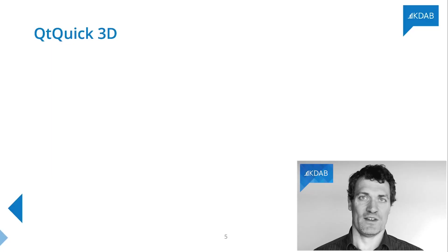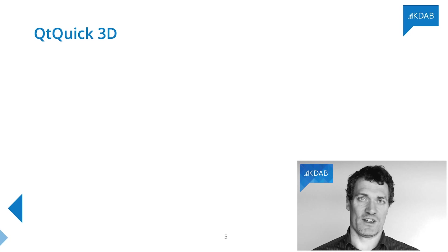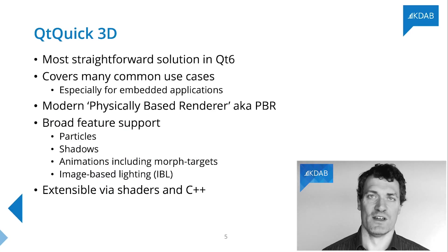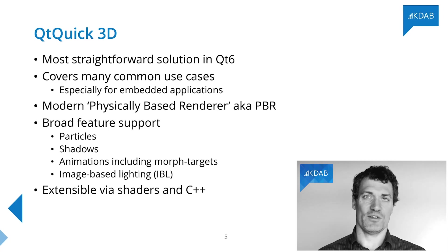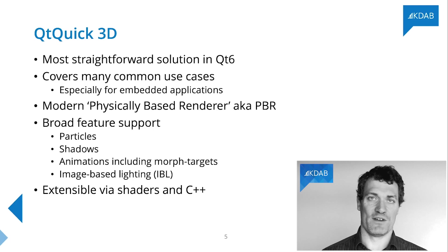It's also worth mentioning at this point that there are a variety of solutions here. The naming does get a little bit confusing, so I'll try to be really clear about which solution I'm talking about. This is Qt Quick 3D, which is the new solution for 3D content added in Qt 5.15, and which is the out-of-the-box solution in Qt 6. Qt Quick 3D is the most straightforward solution for Qt 6 — a modern renderer targeting the common features needed, particularly on embedded Qt applications, to get modern 3D content into your application in a straightforward way.